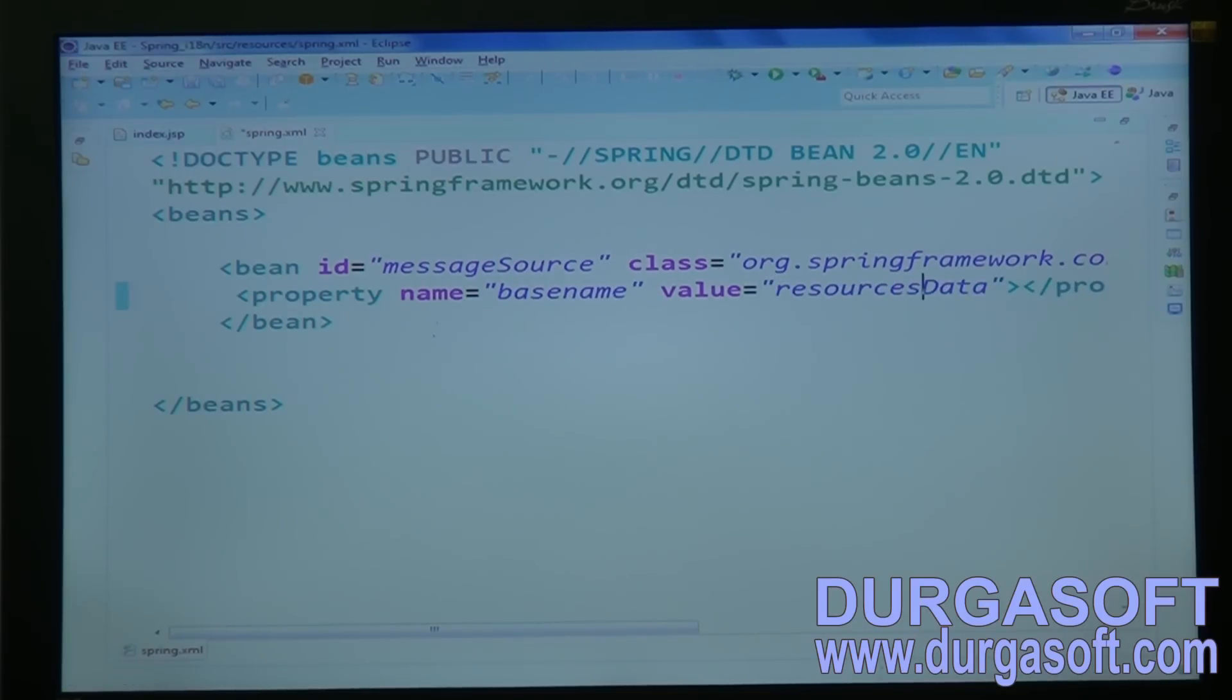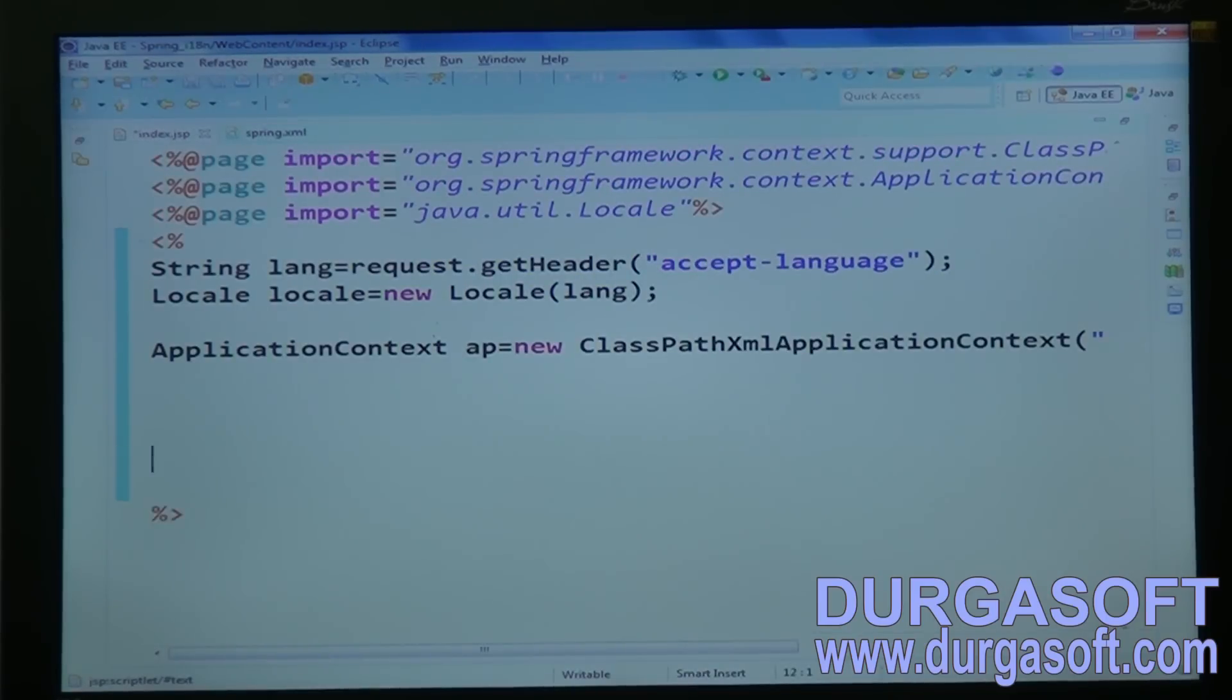But the package name is resources slash data. Without any extension, only base name, we have to supply here. That's it. Okay. Then call ap dot get message. First one, you have to pass your required value label. And the next, run time arguments. If you don't require, keep it null. And your language, locale value you have to pass. Then finally, you can expect a string value here.